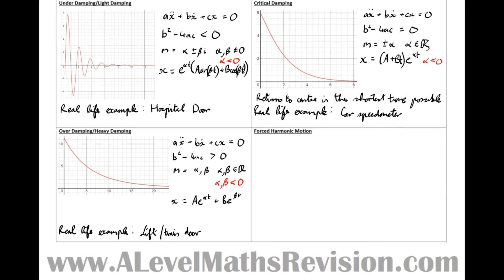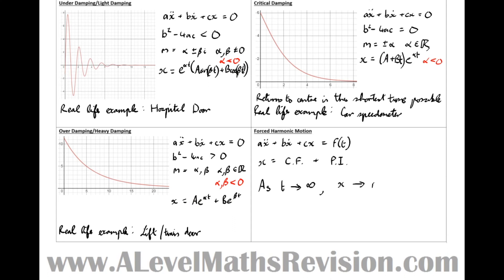Finally, we've got no damping at all — we've got forced harmonic motion. We can't really give a single graph of this because it could look like anything. Mathematically, forced harmonic motion occurs when ax double dot plus bx dot plus cx equals some non-zero function. We know that these particular types of solution have the form x equals the complementary function plus the particular integral. Typically the complementary function will be one of the three damping cases, all of which decay to zero over time. So as t approaches infinity, x just approaches the particular integral.